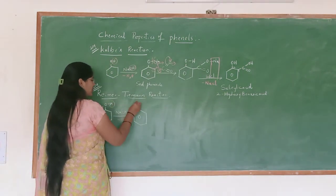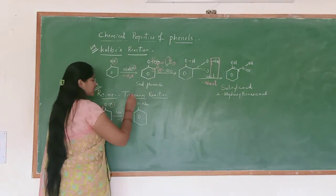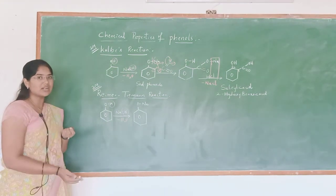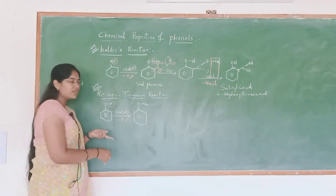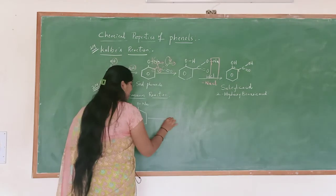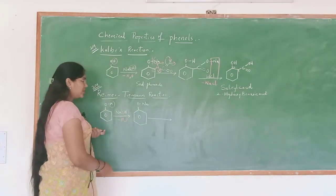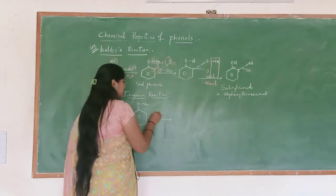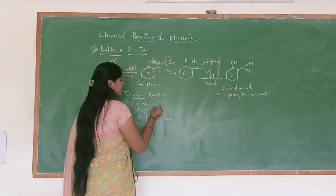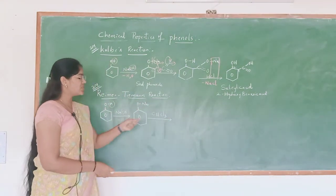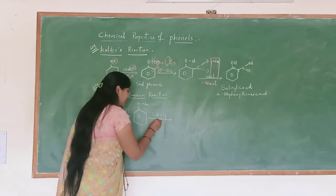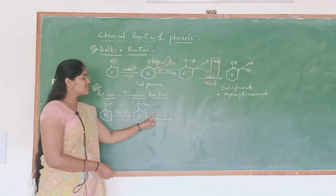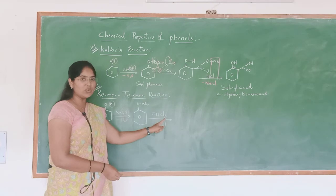Sodium is added to the oxygen to give sodium phenoxide. This sodium phenoxide is highly reactive due to being present in the form of a carbanion. Now again it undergoes reaction with chloroform, that is CHCl3. When it reacts with CHCl3, it eliminates HCl.